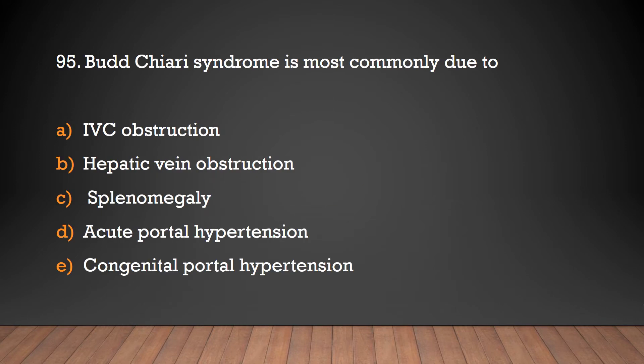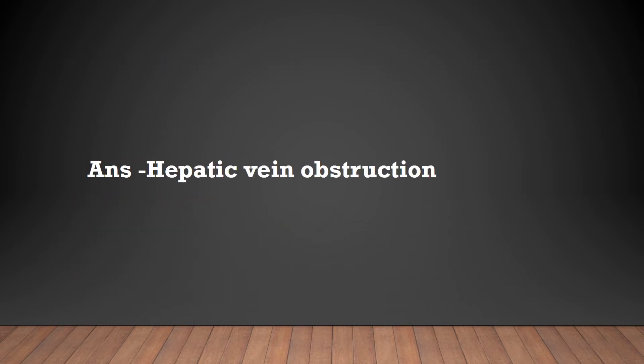Budd-Chiari syndrome is most commonly due to: inferior vena cava obstruction, hepatic vein obstruction, splenomegaly, acute portal hypertension, congenital portal hypertension. Answer: Hepatic vein obstruction.